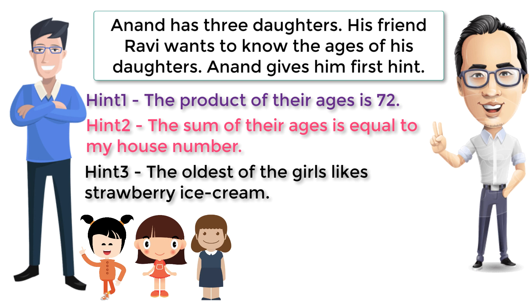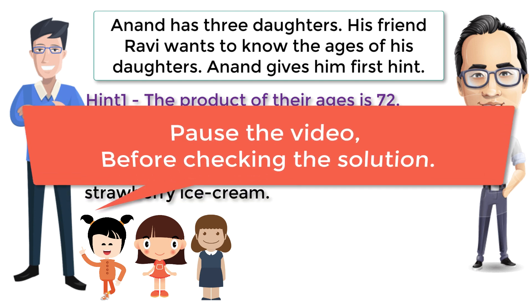The third hint is: the oldest of the girls likes strawberry ice cream. Now Ravi is able to guess after the third hint. Can you guess what are the ages of the three daughters? Feel free to pause the video and try yourself before checking the solution.